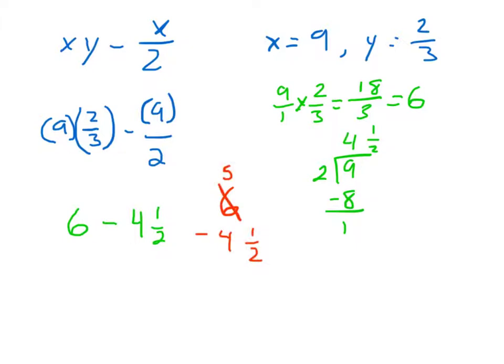6 minus 4 and a half. I'm going to rewrite that. And I'll do that just off to the side over here. 6 minus 4 and a half. Make that a 5. 2 over 2. Be a half. 5 minus 4 is 1. So, that's my final answer there. 1 and a half.